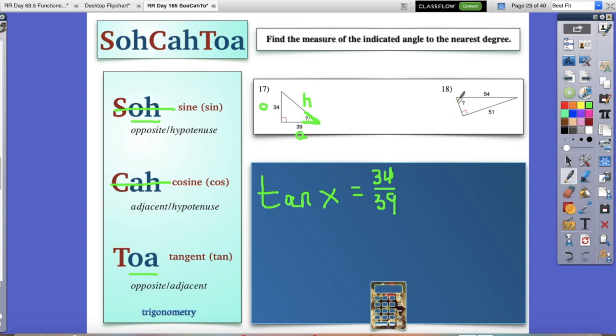Let's try number 18. This time they want this angle right here. Let's label them O, A, and H. We know our H is the hypotenuse here, this diagonal of a right triangle. Across from that is opposite of the angle, so this is definitely our O, and the little guy over here is the adjacent side.